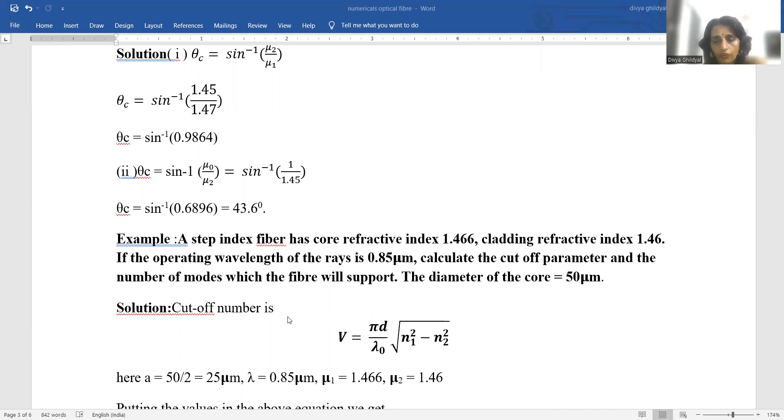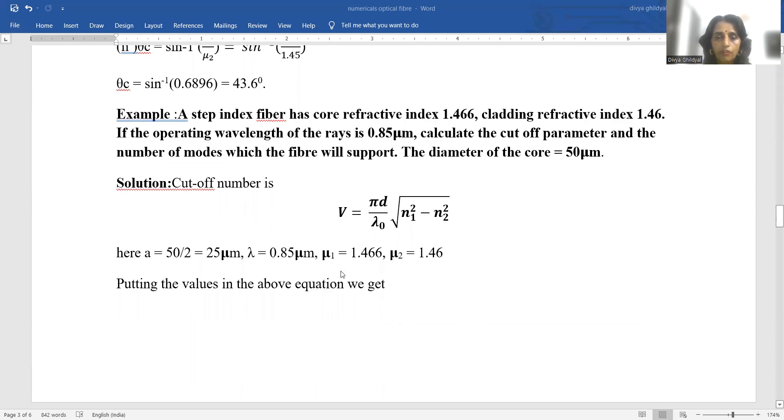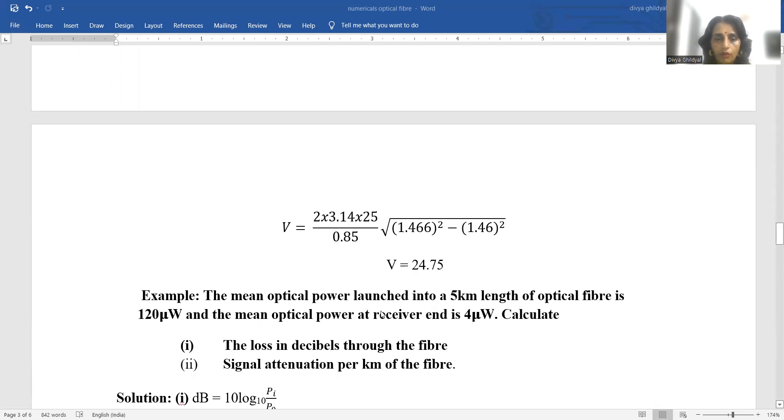A step index fiber has a core refractive index 1.466, cladding refractive index 1.46. If the operating wavelength of the rays is 0.85 micrometer, calculate the cutoff parameter and the number of modes which the fiber will support. The diameter of the core is 50 micrometer. Cutoff number v equals pi d upon lambda naught into under root n1 square minus n2 square. Here, diameter of the core is 50, so its radius becomes half of 50, 25 micrometer. Lambda is 0.85 micrometer, mu1 is 1.466 and mu2 is 1.46. Putting these values in the expression, we get the answer for v number.